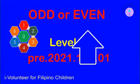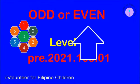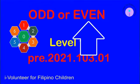An even number is a number which is divisible by two and has a remainder of zero. Zero, by the way, is considered as an even number.